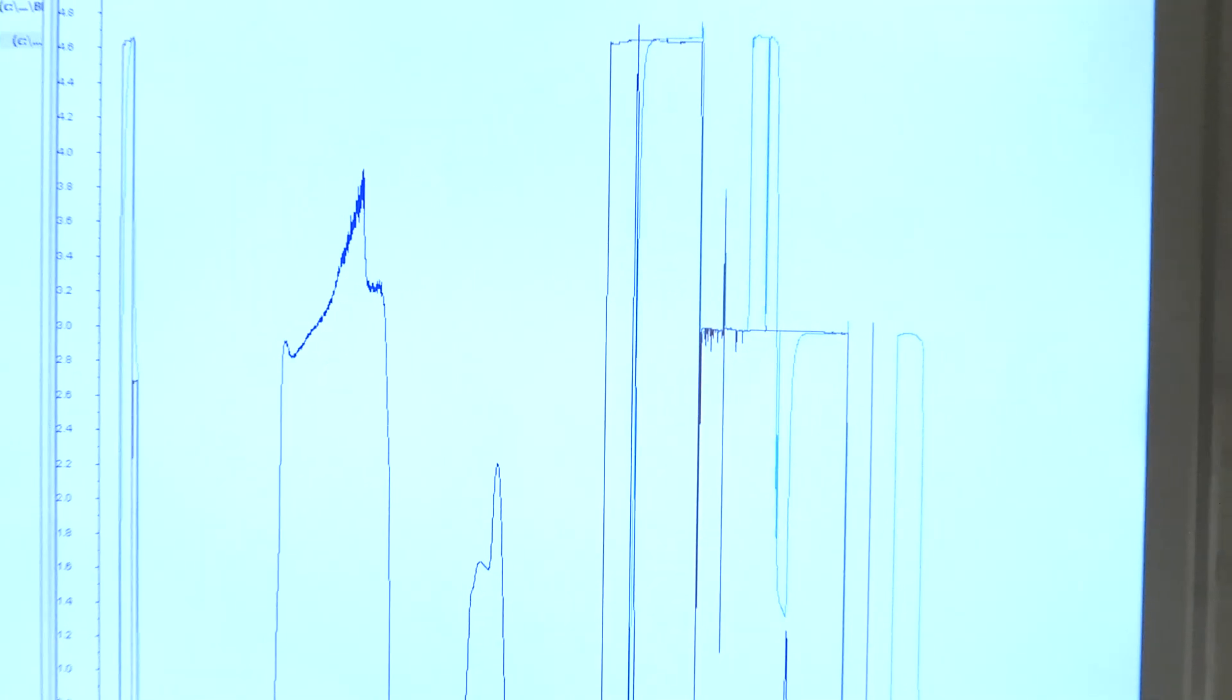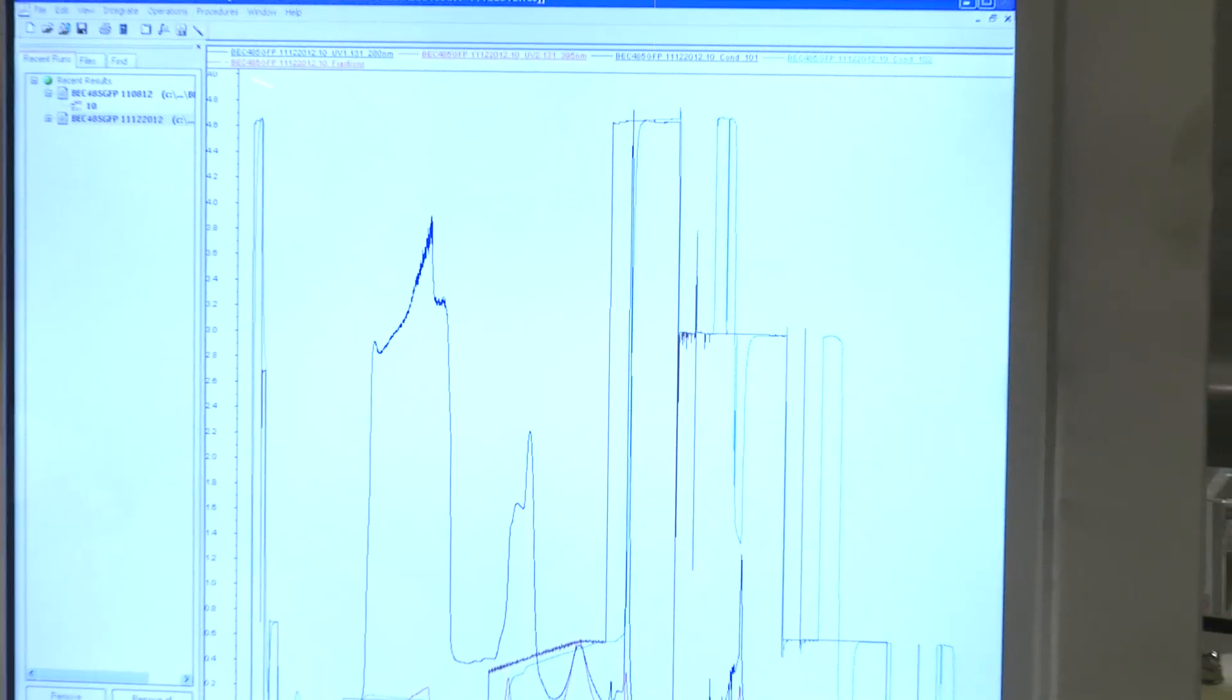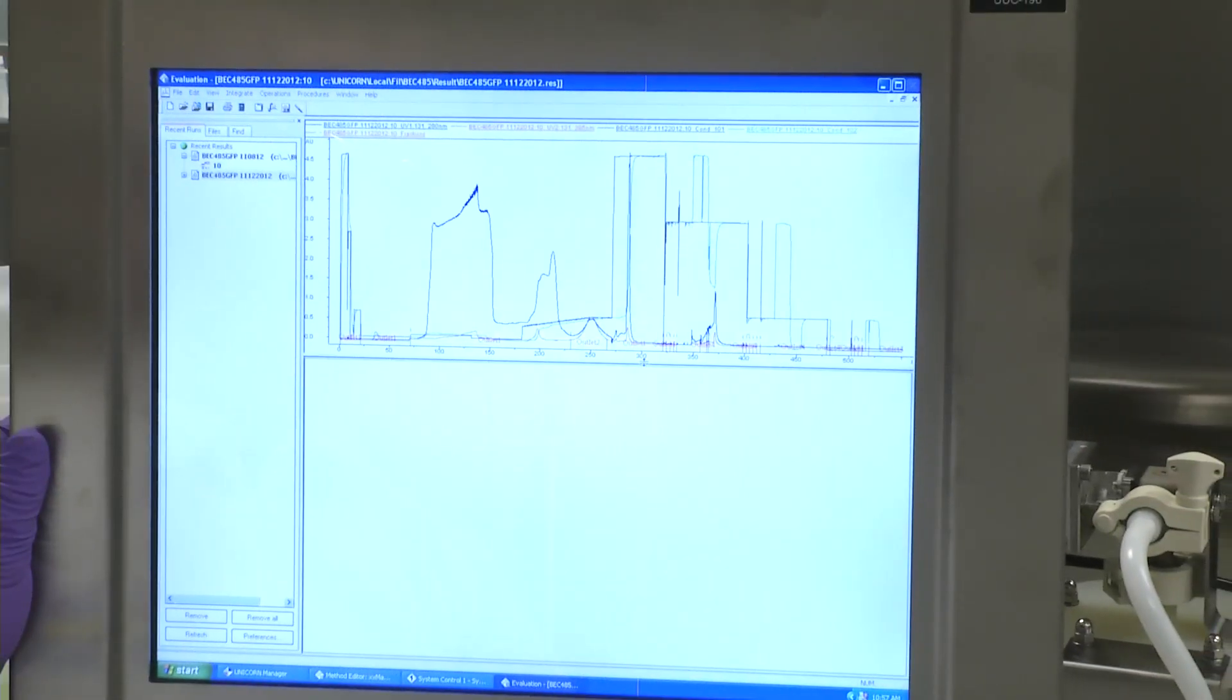At this point in the process, tangential flow filtration is used to concentrate and diafilter the GFP product stream.